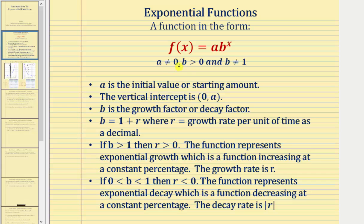In this form, a can't equal zero, b must be greater than zero, and b can't equal one. If a was equal to zero, or b was equal to one, we would have a constant function, not an exponential function.